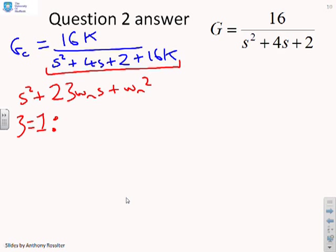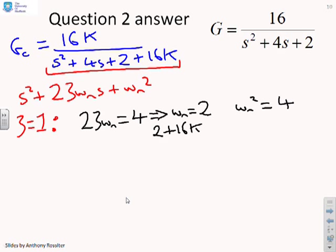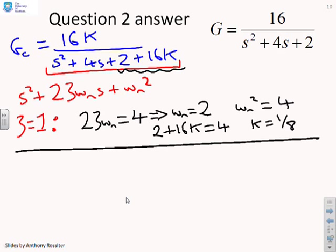So if zeta equals 1, what are we going to get? Well, we know that 2 zeta omega n equals 4. Which tells you, therefore, if zeta equals 1, that omega n equals 2, by substituting zeta equals 1 into that. And therefore, you get omega n squared equals 4. Which tells you that 2 plus 16K equals 4. You'll notice the constant term is here. And that tells you that K equals 1 over 8. So if you choose K equals 1 over 8, you should get a critical damping scenario.